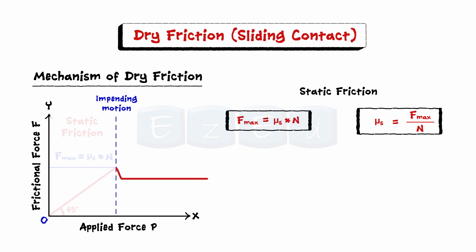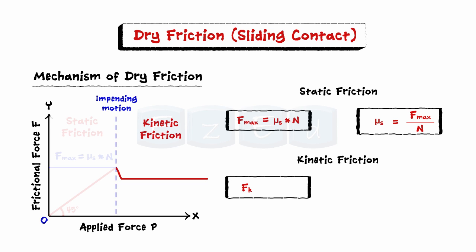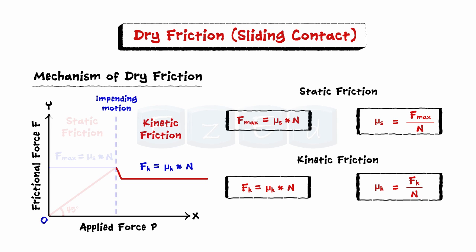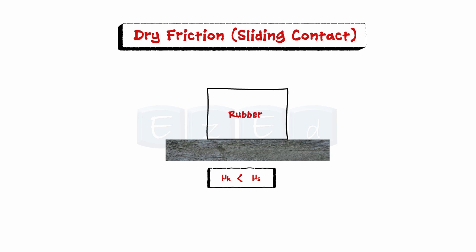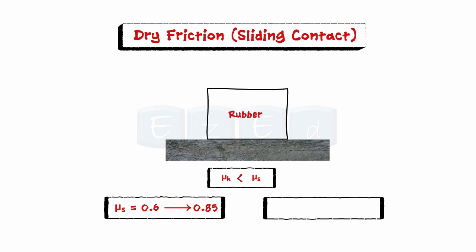After slippage occurs, a condition of kinetic friction accompanies the motion. Kinetic frictional force is less than the maximum static friction force. The kinetic friction force Fk is equal to the product of the coefficient of kinetic friction and normal force N. The coefficient of kinetic friction is the ratio of the kinetic frictional force Fk and the normal reaction N. Since Fk is less than F_max, the coefficient of kinetic friction is always less than the coefficient of static friction. For example, the approximate value of the coefficient of static friction μs between rubber and concrete ranges between 0.6 to 0.85, and the corresponding coefficient of kinetic friction μk is around 0.45 to 0.6.